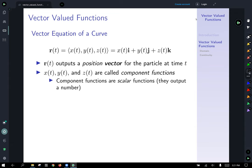r of t outputs a position vector for the particle at a point in time t, and then x of t, y of t, and z of t are also called component functions. Component functions are scalar functions. They don't output a vector, they output a number, an x coordinate or component of the vector. Coordinate of the point, component of the vector.